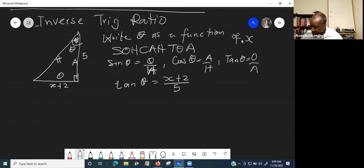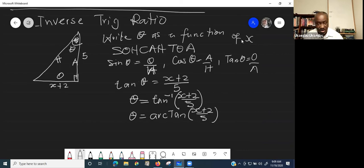So the next thing you will do is, theta is inverse of tangent, which is tan^-1 of x plus 2 over 5. Or you can write it as theta is equal to arctan x plus 2 over 5. And you are done.